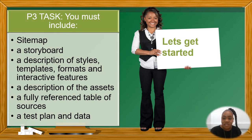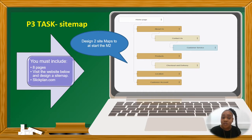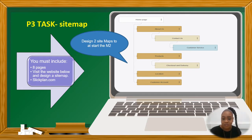For P3, we're going to cover a site map, storyboard, description of styles, a description of the assets, a fully referenced table of sources, and a test plan. We will start with the site map. A hint here is that you need to produce two site maps — you're going to create one and then create an alternative design. This means you would have started your M2. You can visit slickplan.com or design it in Microsoft Word or Microsoft PowerPoint.